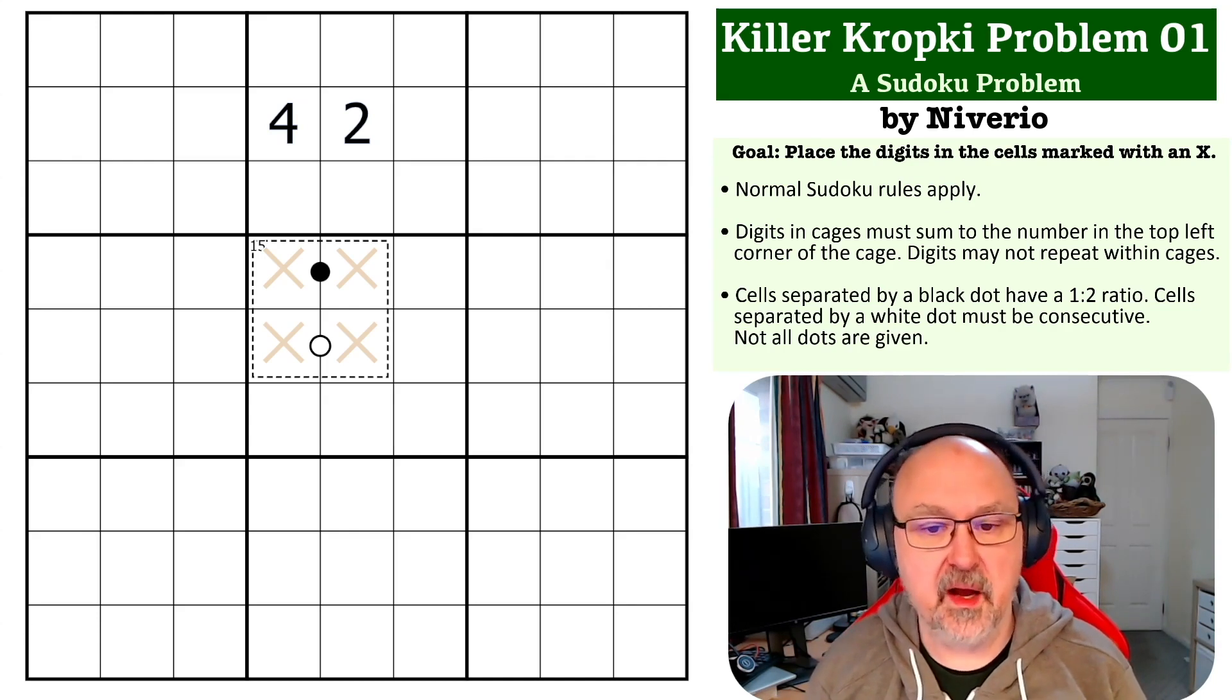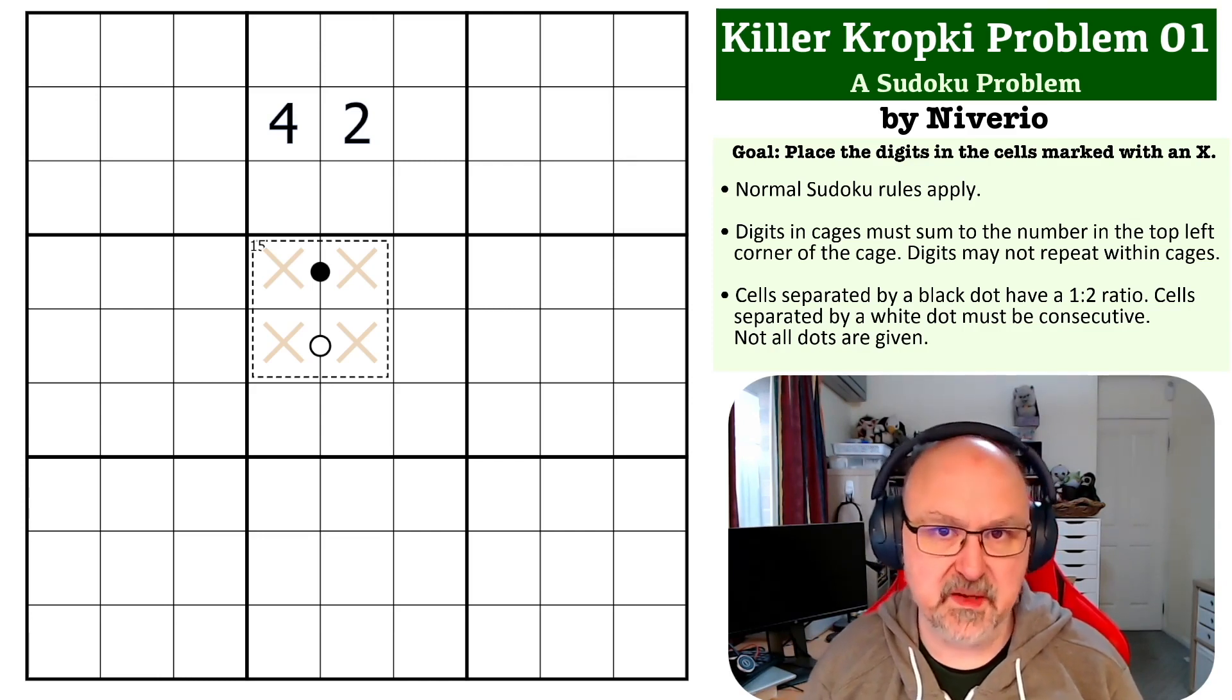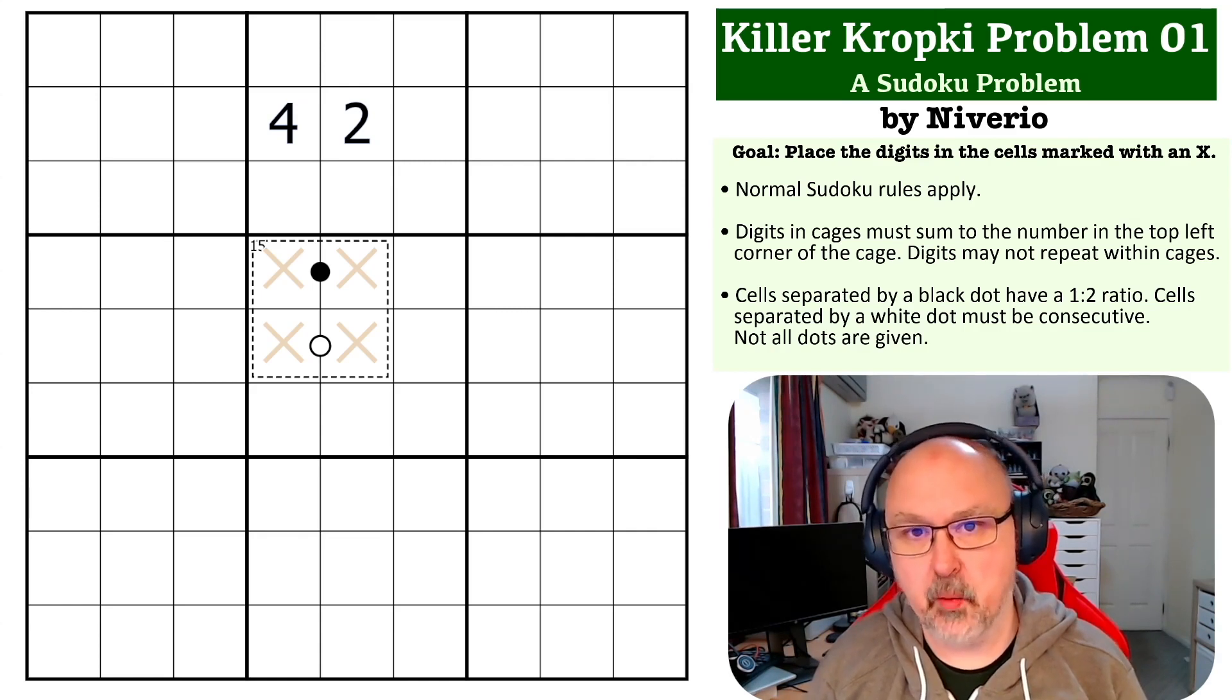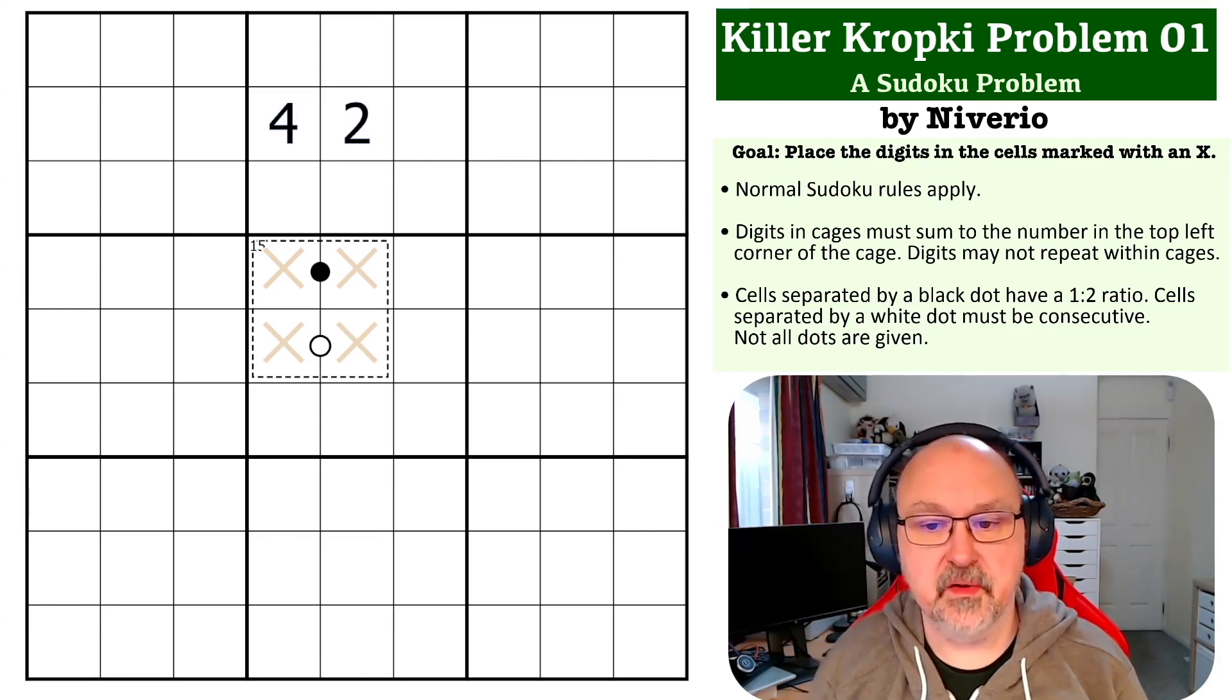With killer cages, the digits placed in the cages must sum to the number in the top left corner of the cage. The kropki dots: a digit separated by a black dot must be in a one-to-two ratio, or one must be double the other. Digits separated by a white dot must be consecutive.